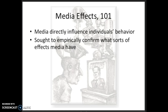Building on mass society theory assumptions about the importance of controlling the media so as to control society — for the sake of some sort of social good, obviously determined by elites — media effects research attempted to empirically confirm through scientific research what sorts of effects the media have. Ultimately, they determined that media have limited effects, but still this body of research has persisted, mostly in the field of psychology and to a lesser degree in sociology.